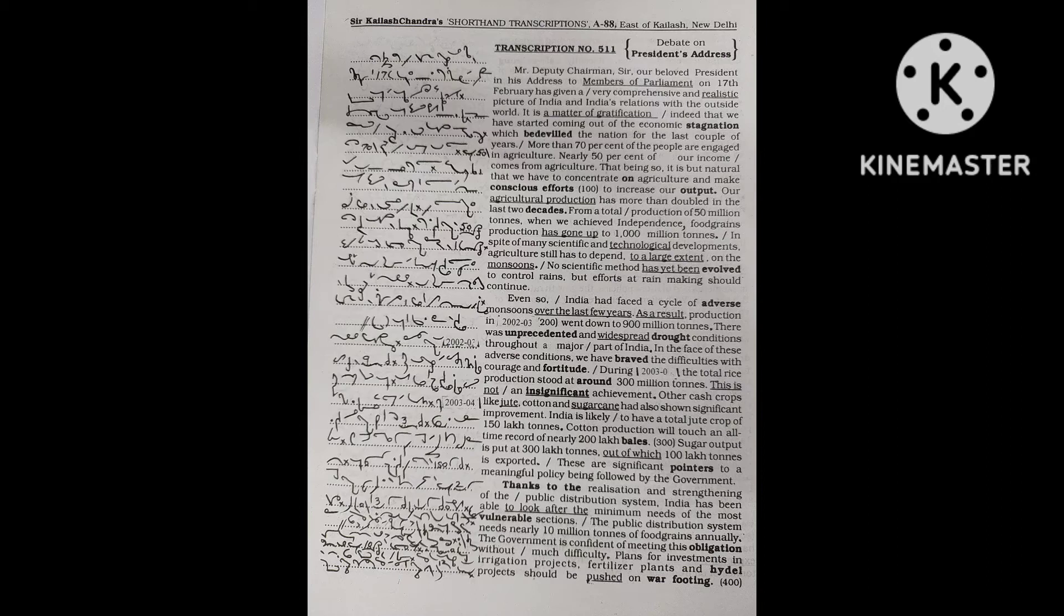Even so, India had faced a cycle of adverse monsoons over the last few years. As a result, production in 2002-3 went down to 900 million tons. There was unprecedented and widespread drought conditions throughout a major part of India. In the face of these adverse conditions, we have braved the difficulties with courage and fortitude.